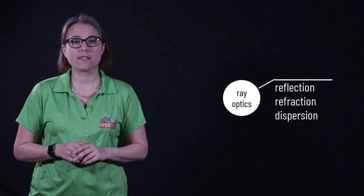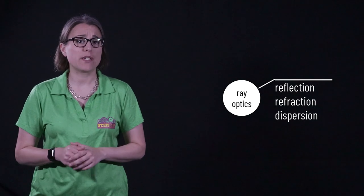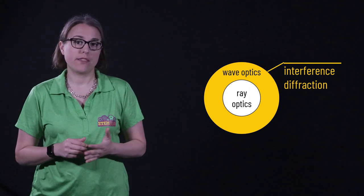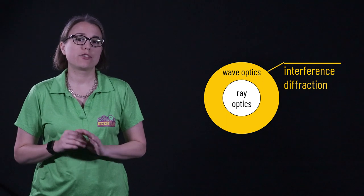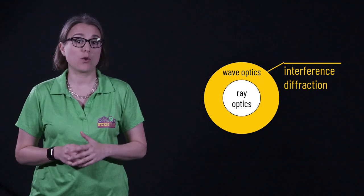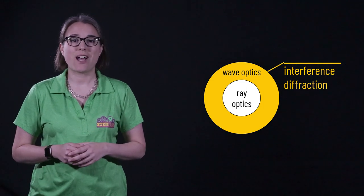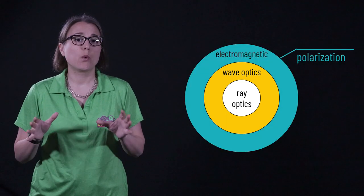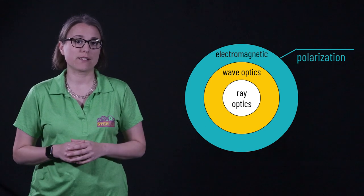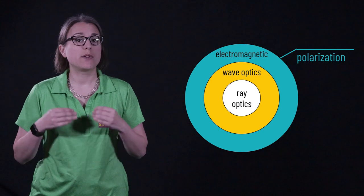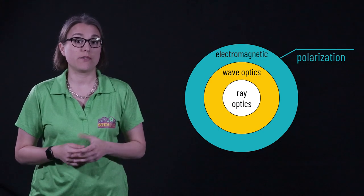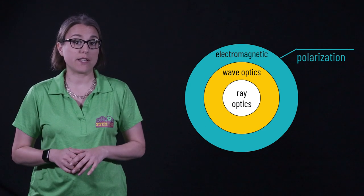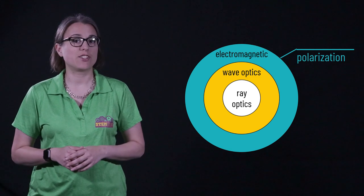Ray optics is great in its simplicity, but there are aspects of light that cannot be explained by this model. We can expand our model to include the wave nature of light. This new model is known as wave optics. Treating light as a wave allows us to understand and quantify phenomena such as interference and diffraction. If we wish to expand our view even more, we can use the model of electromagnetic optics, which takes the wave nature of light into account, but also includes the fact that light is composed of electric field and magnetic field factors oscillating in space. An electromagnetic approach to optics explains and quantifies phenomena such as light polarization.